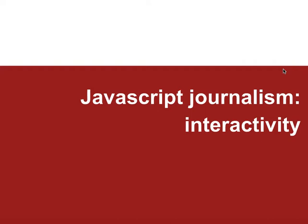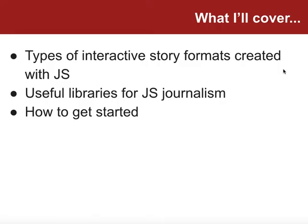In this video I'm going to talk about JavaScript journalism — the skill of using interactivity to tell stories, which often involves using code and specifically JavaScript. I'm going to talk about some of the different formats that you might create using JavaScript and how those relate to interactivity, as well as some libraries and what libraries do in JavaScript. I'll also talk about how to get started. Generally I'm going to focus on editorial ideas and the basic principles you need to know in order to get involved with JavaScript and interactive storytelling.